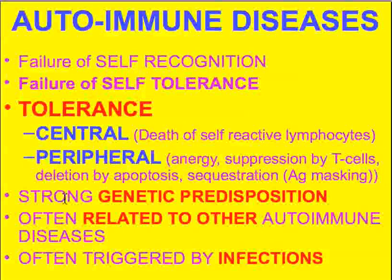Autoimmune diseases run in the family. There's a strong genetic predisposition — not a single-gene Mendelian type, it just runs in families. It's also related to other autoimmune diseases: if you have one autoimmune disease, your chance of having another or expressing it in another way is very, very high. Clinically, autoimmune diseases often follow a known external antigenic or pathogenic infection, such as strep glomerulonephritis or pneumonia, which would then be followed some weeks or months later by classical expression of an autoimmune disease.